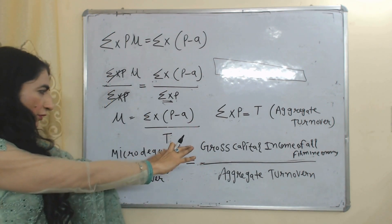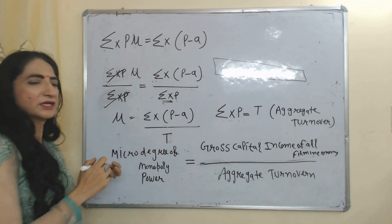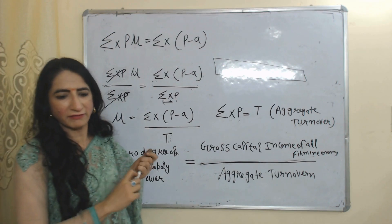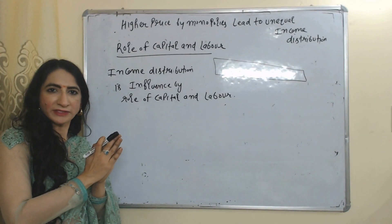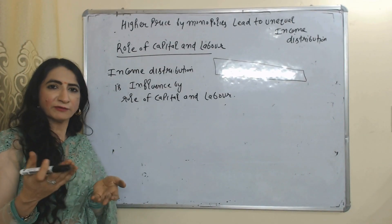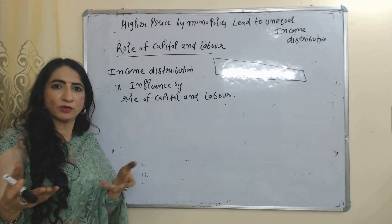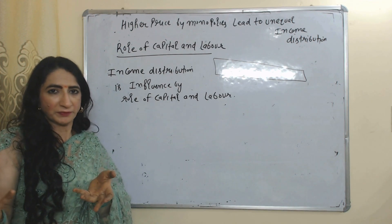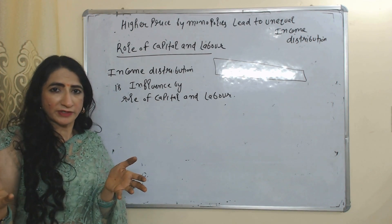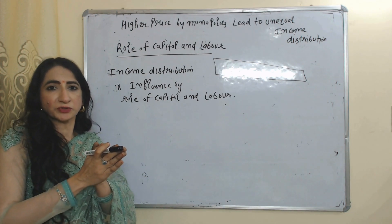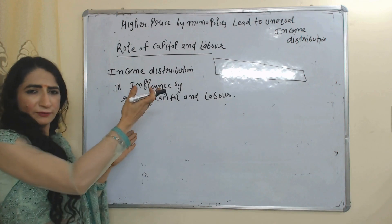Our profit margin depends on the degree of monopoly power. So according to this model, the first thing that influences income distribution is monopoly power. A higher price set by a monopolist can lead to unequal distribution of income.